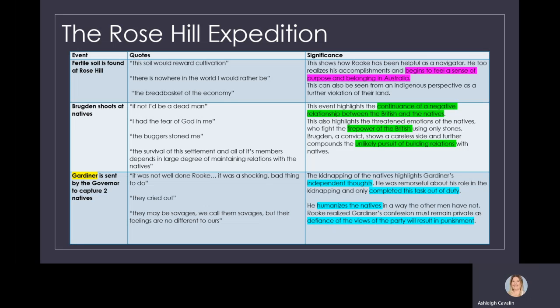During this expedition, a significant event occurs where Brogdon shoots at the natives. Brogdon is a convict, however, he's been used as a games keeper and was allowed to go on the expedition. This event highlights the continuance of negative relationships between the British and the natives. It also highlights the threatened emotions of the natives who fight the firepower of the British using only stones that they throw at Brogdon. Brogdon shows a very careless side and further compounds the unlikely building of relationships by firing at these natives.